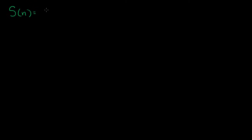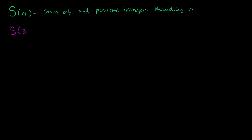I'm going to define a function s of n, and I'm going to define it as the sum of all positive integers including n. The domain of this function is really all positive integers — n has to be a positive integer. We could take s of 3, which is going to be equal to 1 plus 2 plus 3, which is equal to 6. We could take s of 4, which is going to be 1 plus 2 plus 3 plus 4, which is going to be equal to 10.